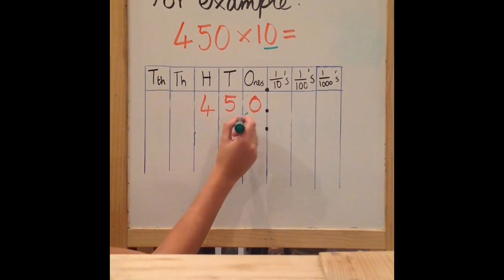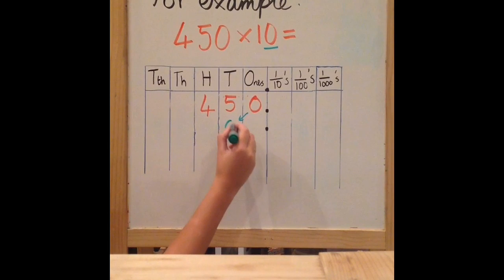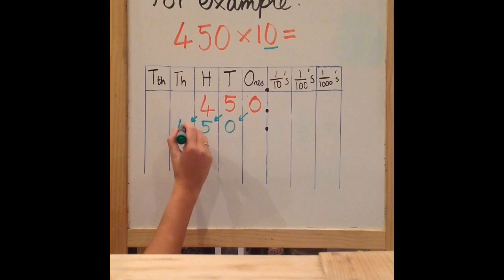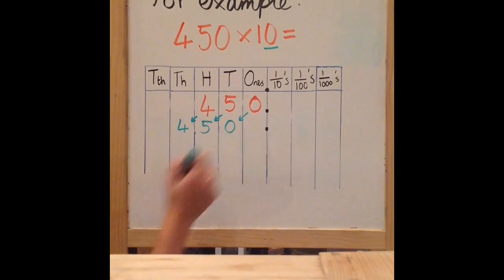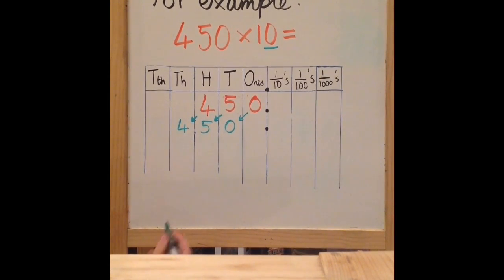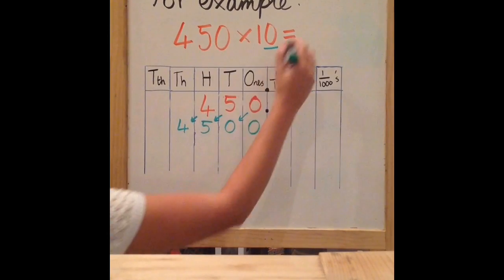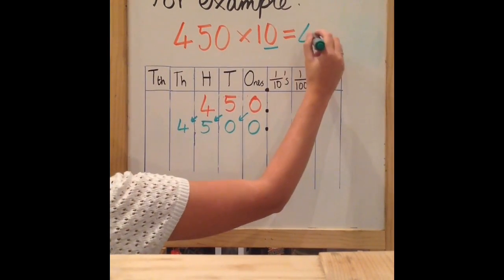So my 0 moves to my 10's column, my 5 moves into my 100's column, and my 4 into my 1000's column. However, I now have an empty column. The only placeholder you can have is a 0, so I must put a 0 in my 1's column. Therefore, 450 multiplied by 10 equals 4,500.